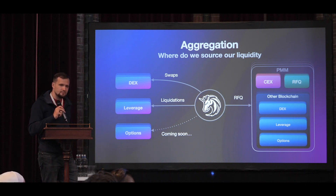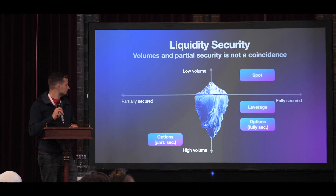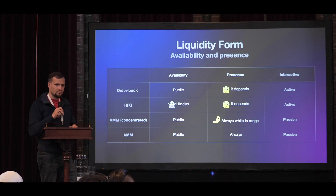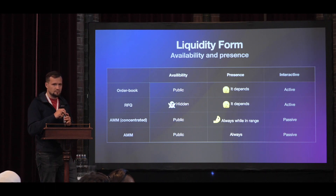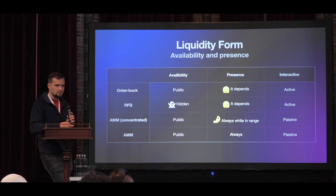I'm curious how you see on-chain and off-chain liquidity starting to work more together in the coming years. As I understand it, you showed this with the PMMs — professional market makers who are active on both centralized exchanges and DEXs. But right now, unless you're a specialized trading firm, you won't be able to do that. And any large financial institution is not going to bridge assets over to chains, yet that's where most of the liquidity comes from.